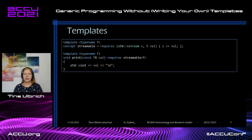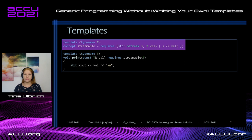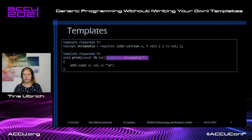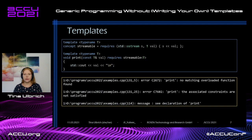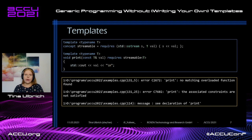C++20 promises better error messages with the usage of concepts. I wrote a streamable concept which requires that the streaming operator is overloaded for the passed-in type. If not, the function will not be part of the overload set. Currently in MSVC the error only says the associated constraints are not satisfied, which is not very helpful. Other compilers like GCC already have slightly better errors, but there's still room for improvement. Templates can also increase compile times and expose implementation details to the interface.